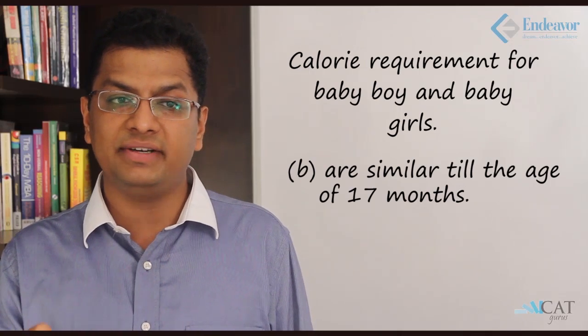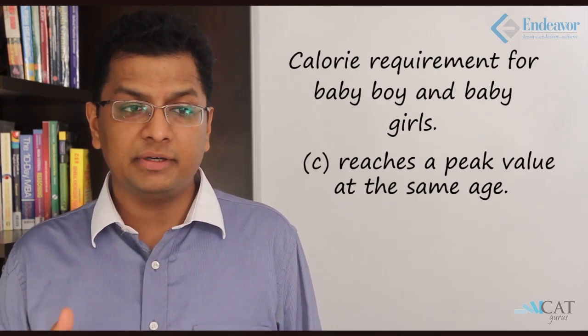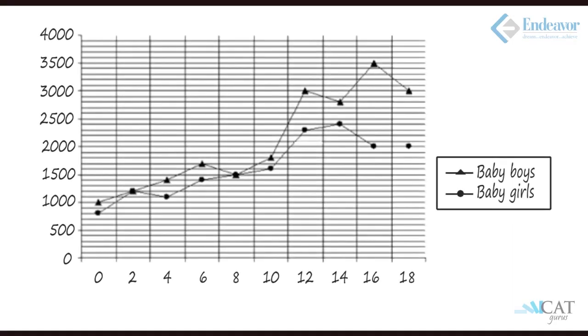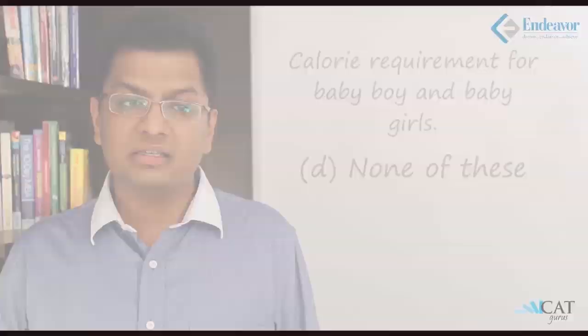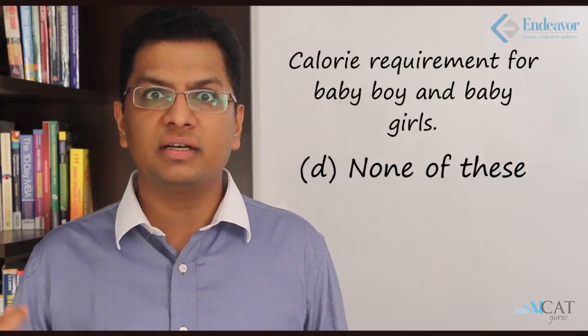The second statement — calorie requirements are similar till the age of 17 months — is also not true, because from zero to two months both go up, but from two to four months one goes up and the other goes down, so there is no similarity throughout. The third statement — both reach a peak at the same age — is false because boys peak at 16 months and girls peak at 14 months. Hence the answer is 'none of these.'